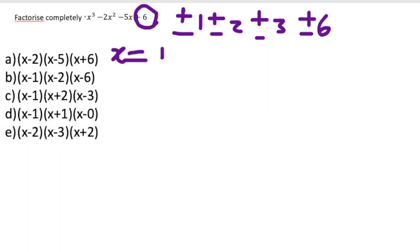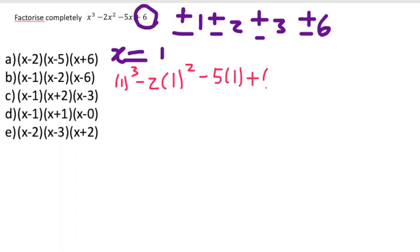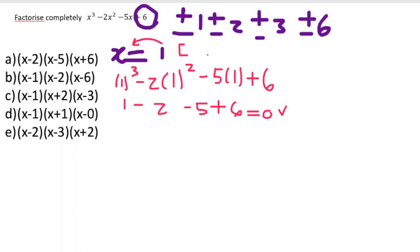I'm going to try X equals one. Replacing X with one: one cubed minus two times one squared minus five times one plus six gives one minus two minus five plus six. Adding: one minus two is negative one, minus five is negative six, plus six is zero. So X equals one gives zero, meaning it's a factor.